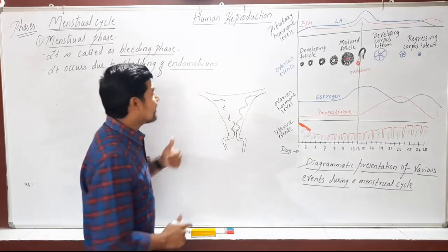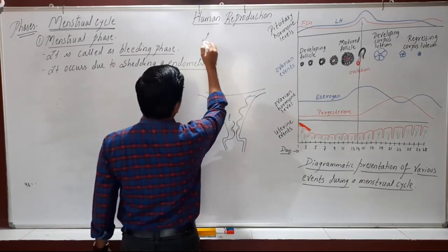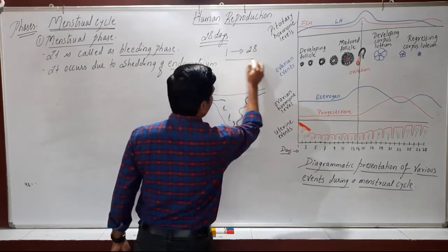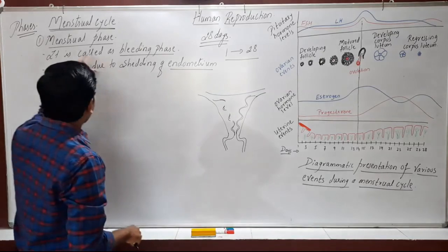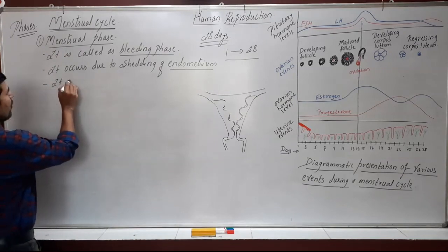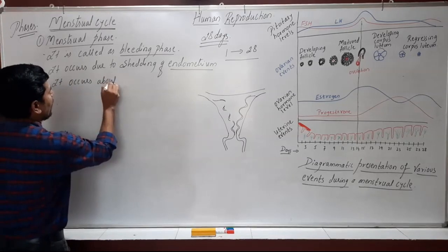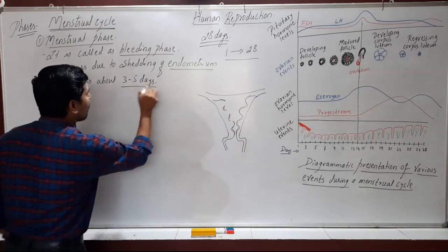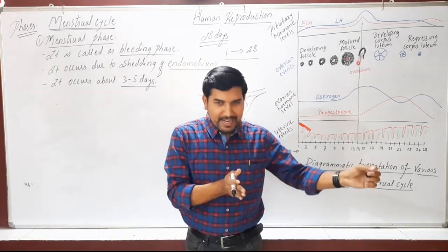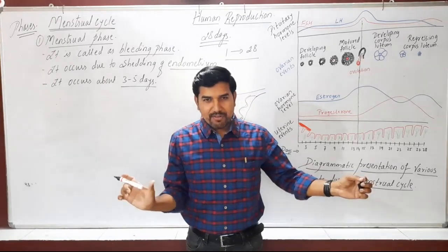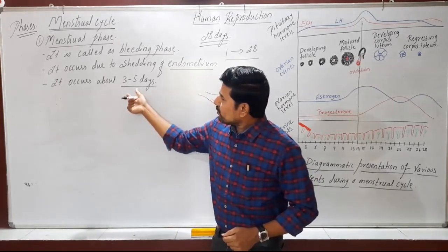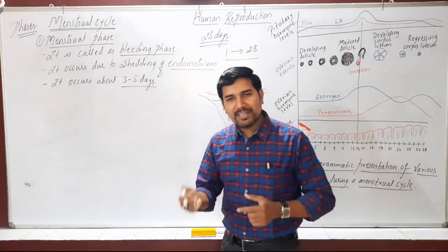Out of the 28-day menstrual cycle — day 1 to day 28 — we divide into four phases. The first phase is the menstrual phase, which occurs from day 1 to day 3 or day 5. So the menstrual phase takes the first three to five days out of 28 days. This is the bleeding phase.